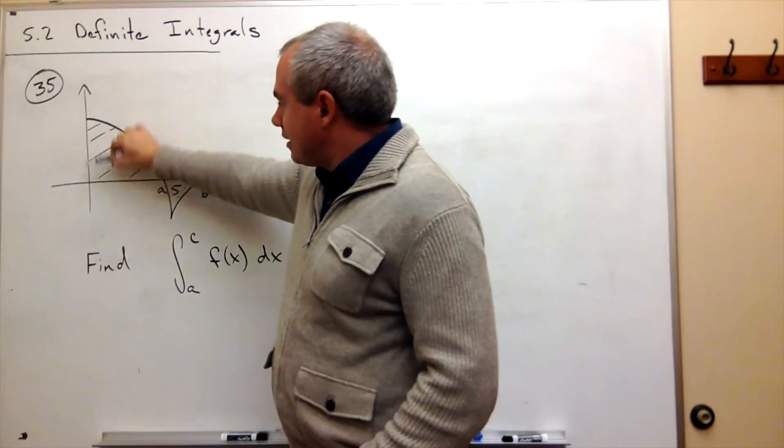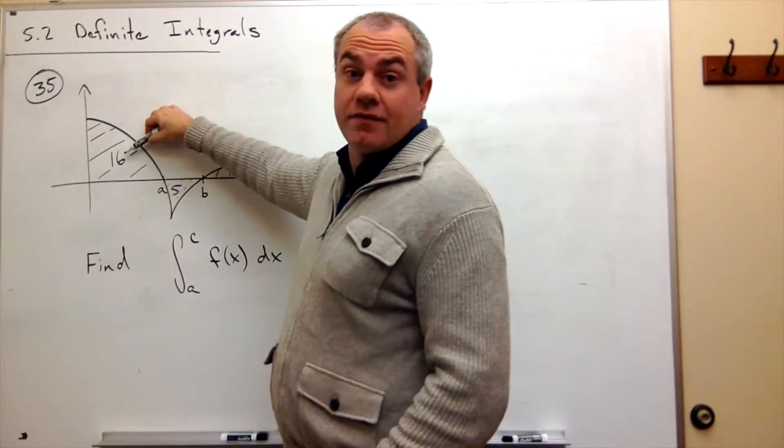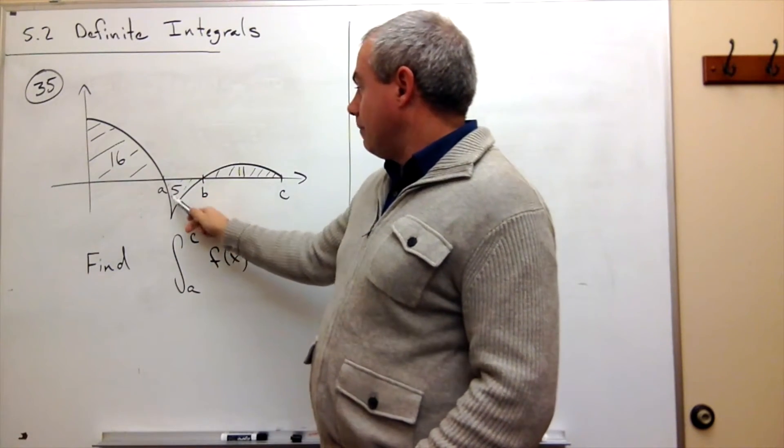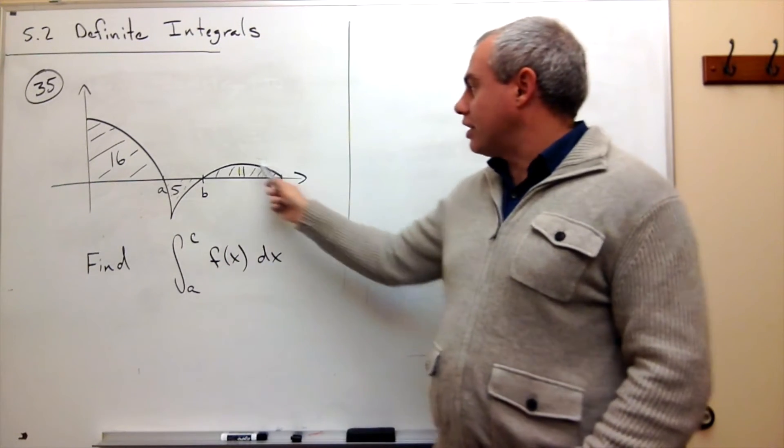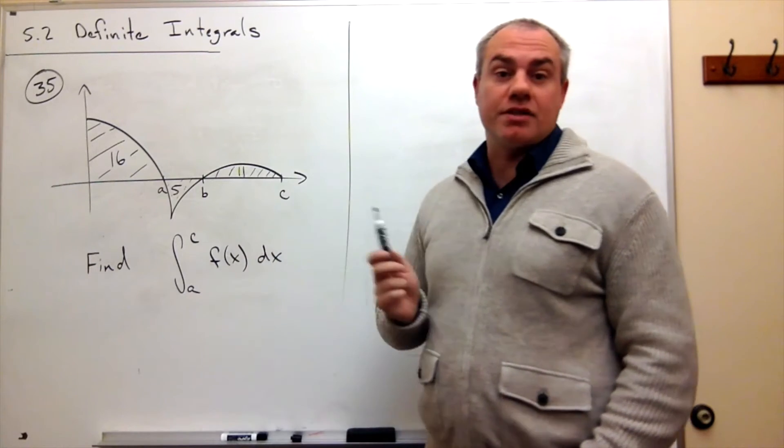In this piece of area, we have 16 units. In this piece down here, we have 5 units of area, and in this piece over here, we have 11 units of area.